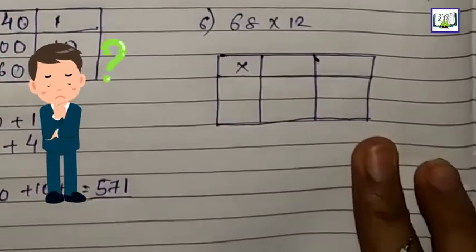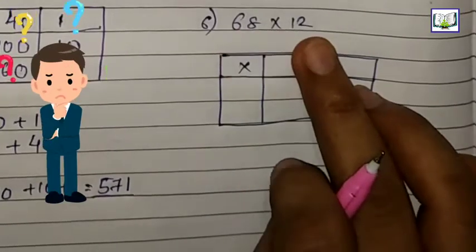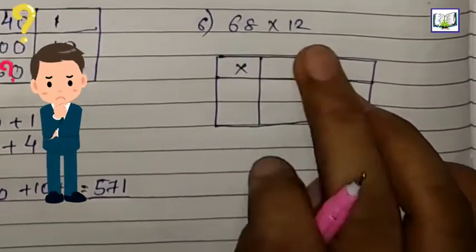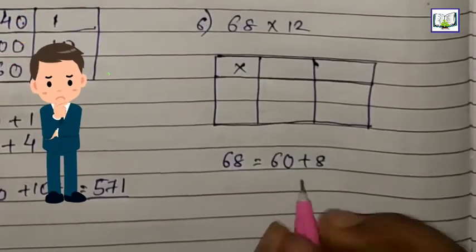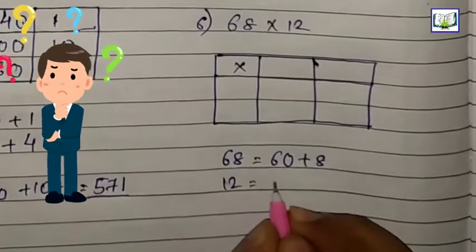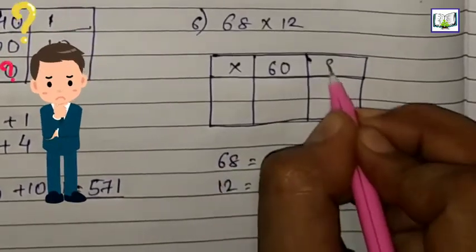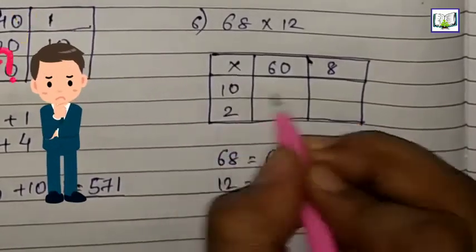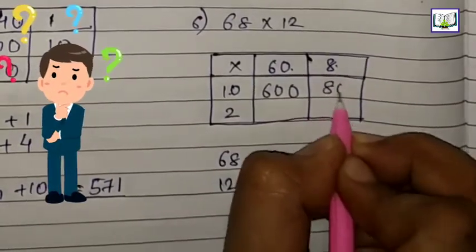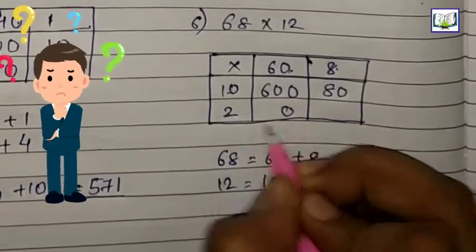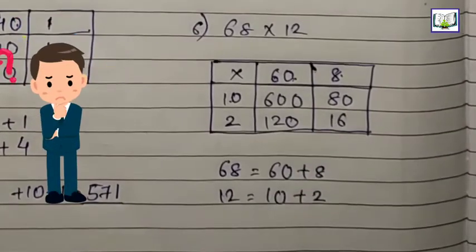Let's see the sixth question. The question is 68 into 12. We will first break 68 and then 12. 68 means 60 plus 8. 12 means 10 plus 2. Here we have 60, here 8, here 10, and here 2. Now 10 times 0 is 0, 10 times 6 is 60, 10 times 8 is 80. 2 times 0 is 0, 2 times 6 is 12, 2 times 8 is 16.